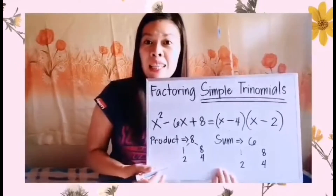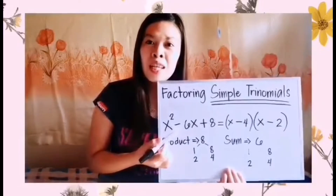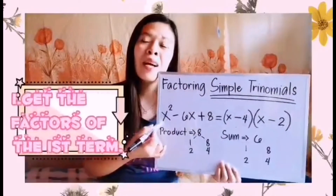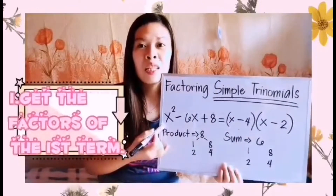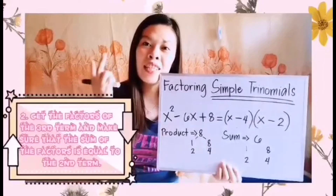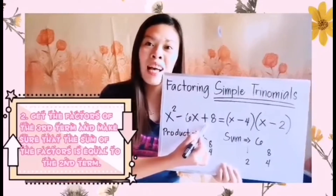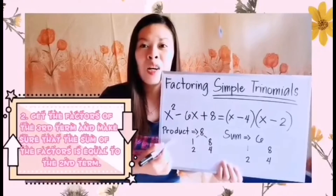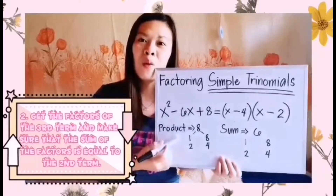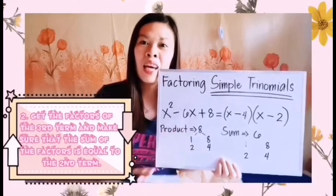How did we do that? As you can see, this example is almost the same as the first one — the only difference is the sign in between. Step one: consider the first term, positive x squared. The factors are x and x. Step two: consider the third term, positive 8. The factors are 1 and 8, or 2 and 4. Both give a product of positive 8.